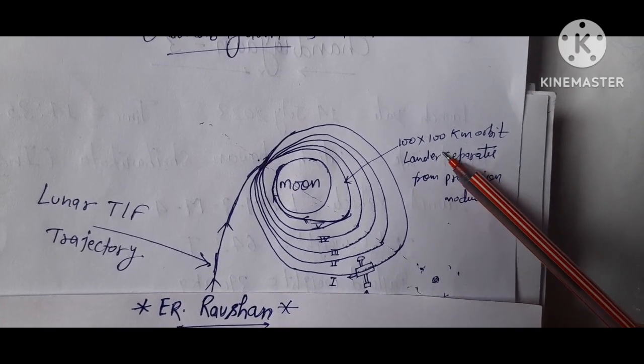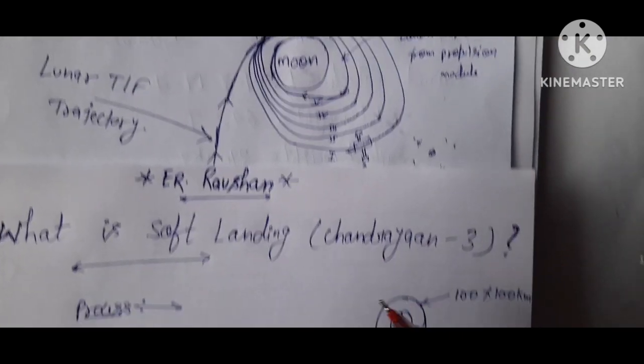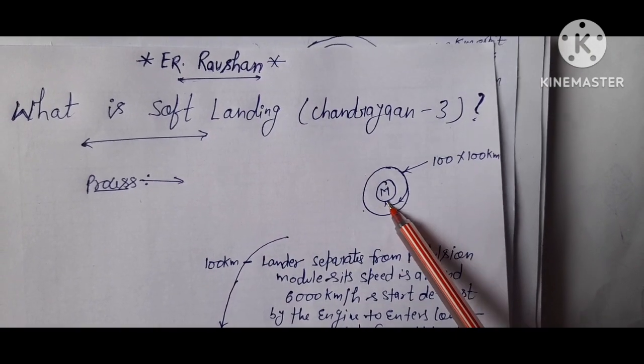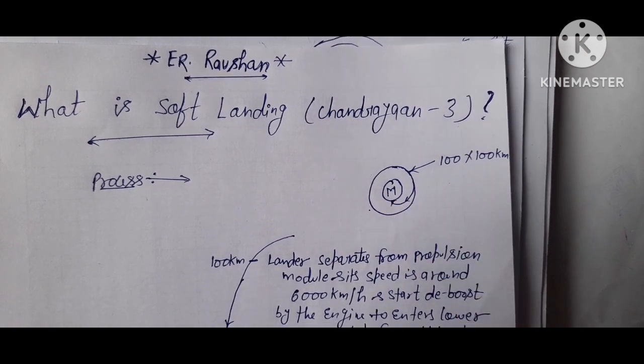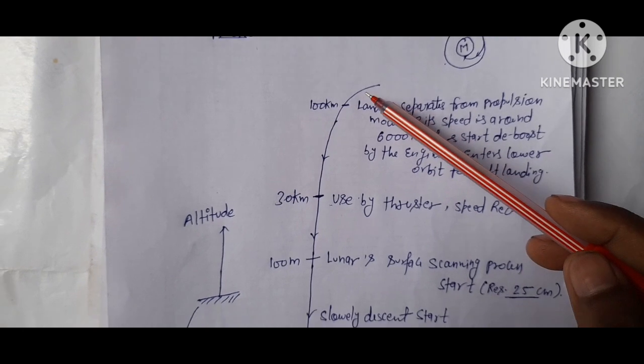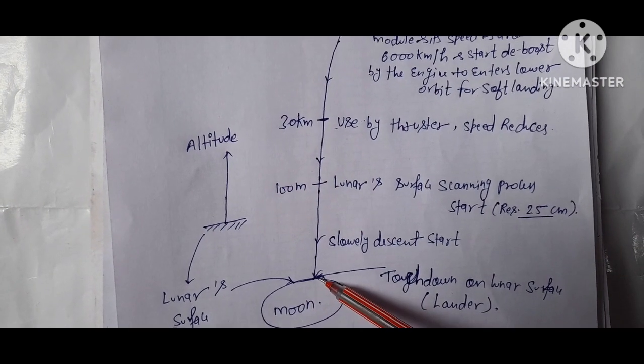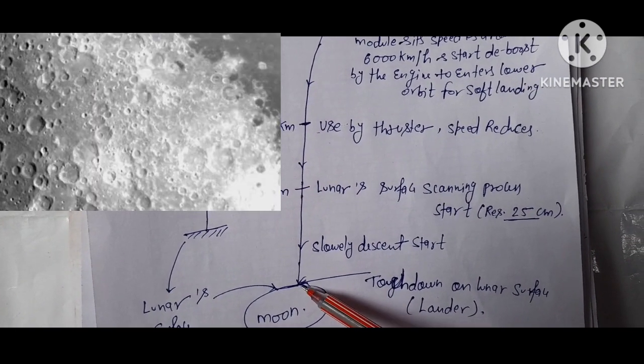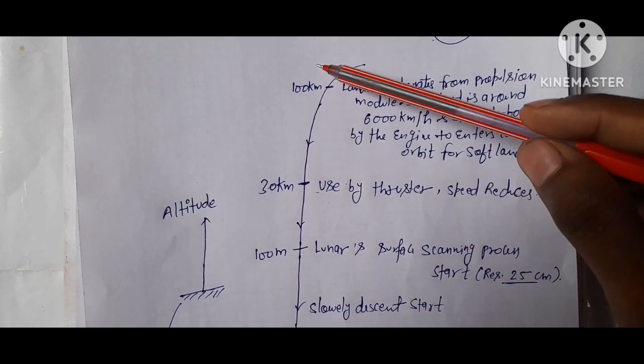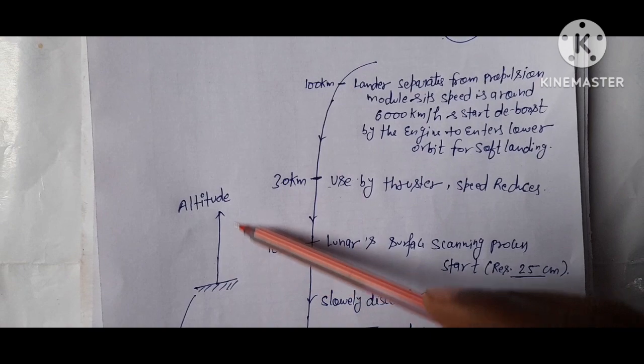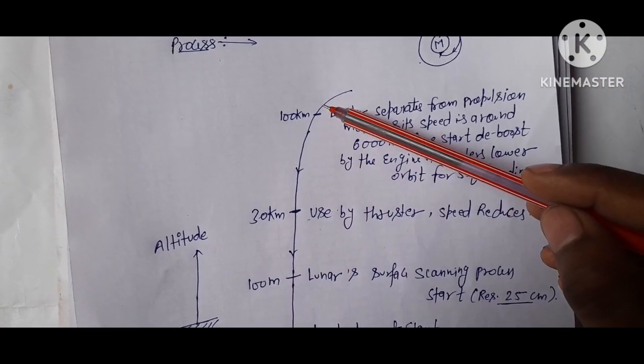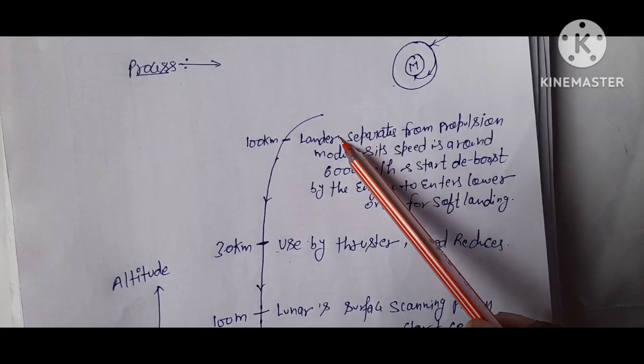From the 100 x 100 km orbit, you see here the process of soft landing. It will go to the moon surface. This is the moon surface where the lander is landing, and this direction shows altitude from the moon surface to 100 km.